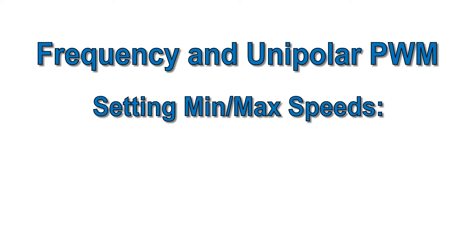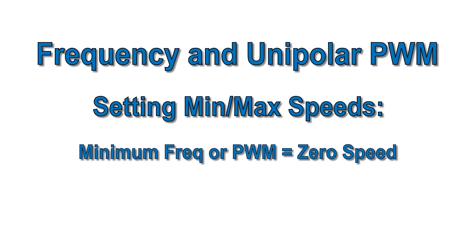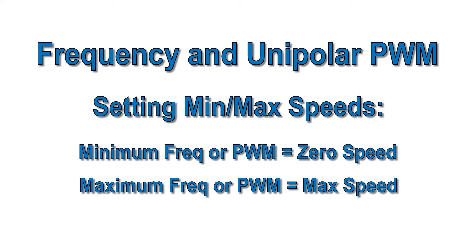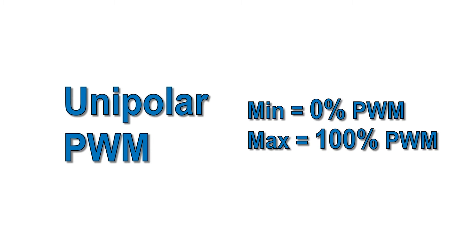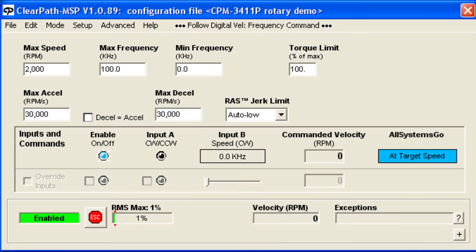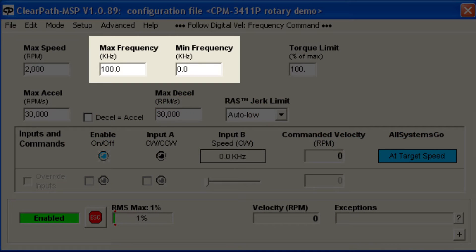Frequency mode and unipolar PWM mode work in a similar way. You have defined minimum and maximum frequencies or PWM duty cycles, and they correspond to zero speed and your user-defined max speed, respectively. For unipolar PWM, the minimum and maximum duty cycles are fixed at 0% and 100%. For frequency, the minimum and maximum are user-defined.